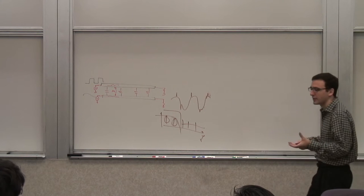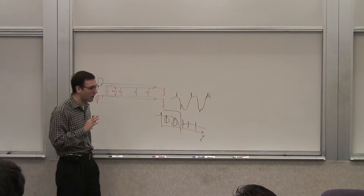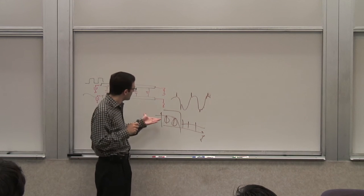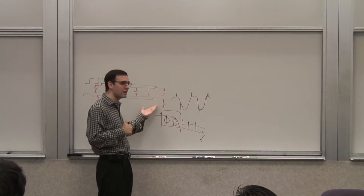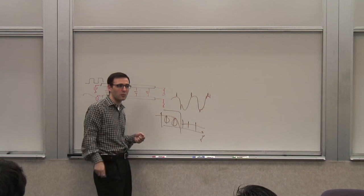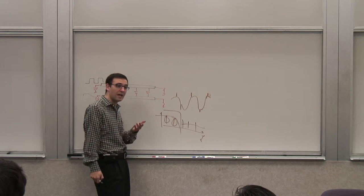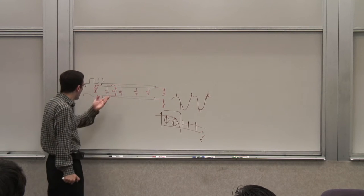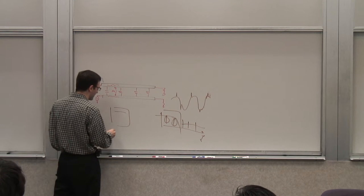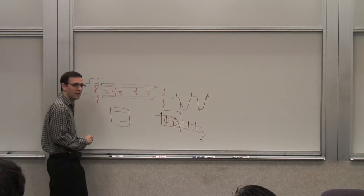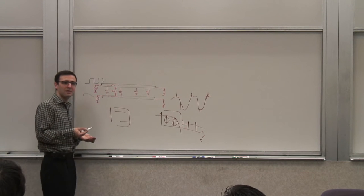There are other ways to make filters using gyrators and things of that sort, and we may talk about those later. So a low-pass filter may work to some extent, but not a whole lot. Another approach: shield your lines or make them far apart. If I have a chip and this is a digital line, make sure my analog line is on the other side. But that only alleviates the problem — it doesn't eliminate it.